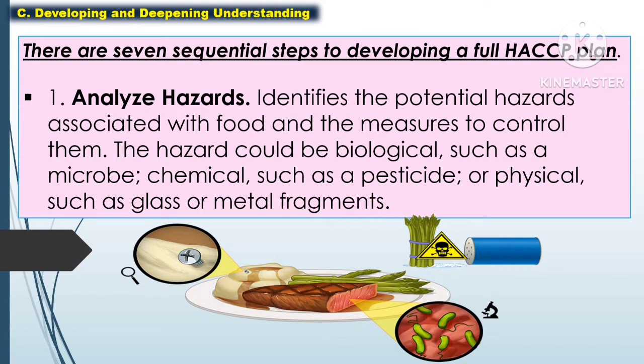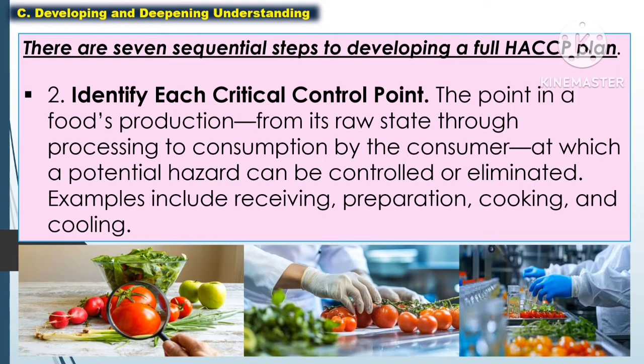The first step is to analyze hazards — identify the potential hazards associated with food and the measures to control them. The hazard could be biological, such as a microbe; chemical, such as pesticides; or physical, such as glass or metal fragments.